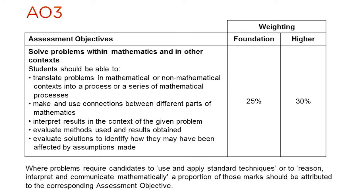AO3 is about solving problems within mathematics and in other contexts. The weighting given to AO3 is 25% at foundation tier and 30% at higher tier. Students should be able to translate problems in mathematical or non-mathematical contexts into a process or series of mathematical processes, make and use connections between different parts of mathematics, and interpret results in the context of the given problem. New aspects include evaluating methods used and results obtained, and evaluating solutions to identify how they may have been affected by any assumptions made.